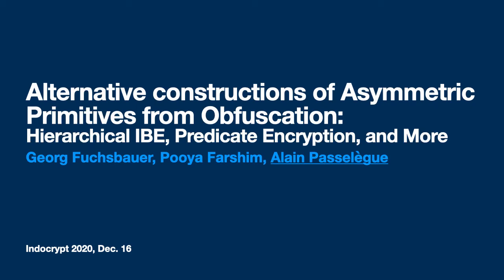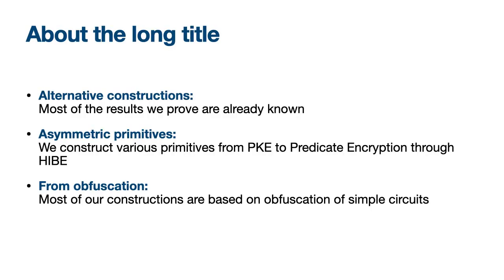Hello and welcome to this talk. I'm going to talk about alternative constructions of asymmetric primitives from obfuscation. This is joint work with Georg Fussbauer and Pouya Farschim, and I'm Alain Passleg. We construct alternative constructions in the sense that the results we prove are already known from similar assumptions — we just propose alternative ways of getting these results. We focus on asymmetric primitives: public key encryption, identity-based encryption, HIBE, and predicate encryption, all based on obfuscation.